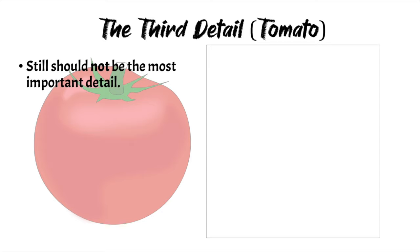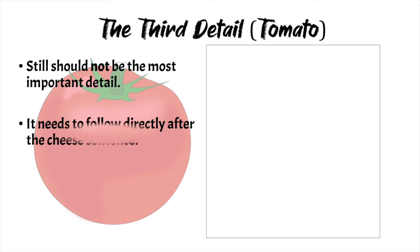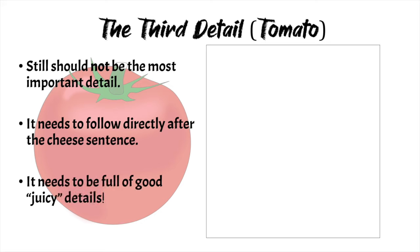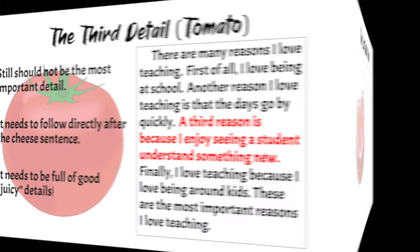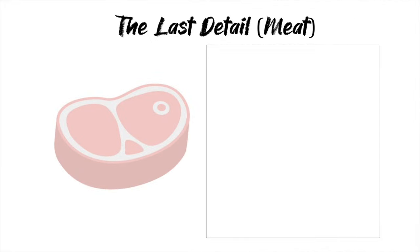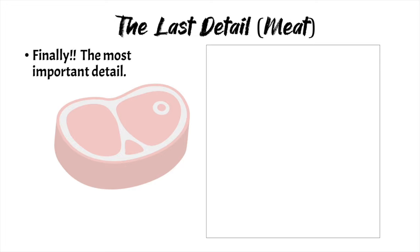The third detail is the tomato. It should still not be the most important detail. It needs to follow directly after the cheese sentence and be full of good juicy details. Like in our example: 'A third reason is because I enjoy seeing a student understand something new.'